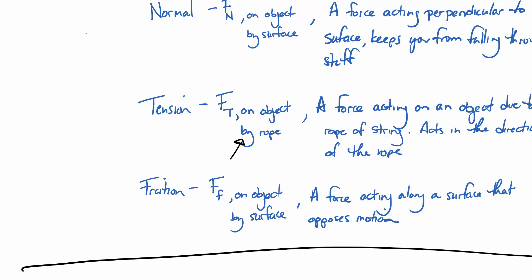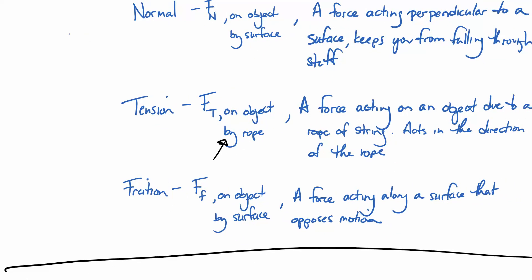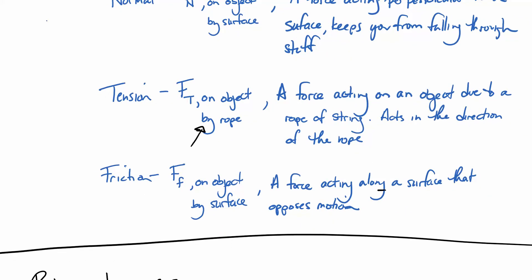And lastly, we have friction, which I cannot spell apparently. So, friction is on an object by a surface, but this time, it's going to act along a surface instead of perpendicular to surface, and it's going to oppose motion. So, if I'm trying to go forward, friction is going to be backwards. If I'm trying to fall down, friction is going to act up. It's always going to act in the opposite direction of motion.